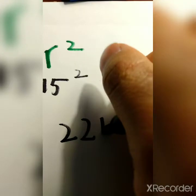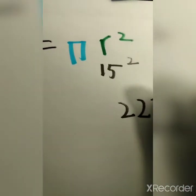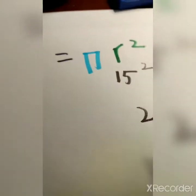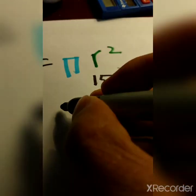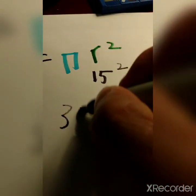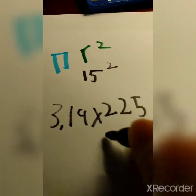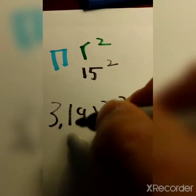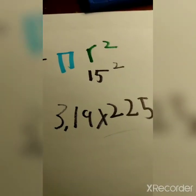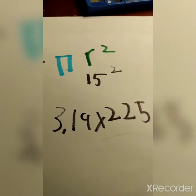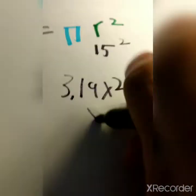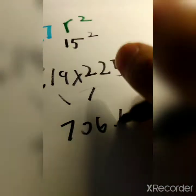So we have to square the radius: 15 times 15 is 225. But we're not done yet — we also have to multiply that by pi. Let's say that pi is 3.14. So we're going to multiply 3.14 by 225. You're going to need a calculator for this. If you multiply those two numbers, you'll get an answer of 706.5.